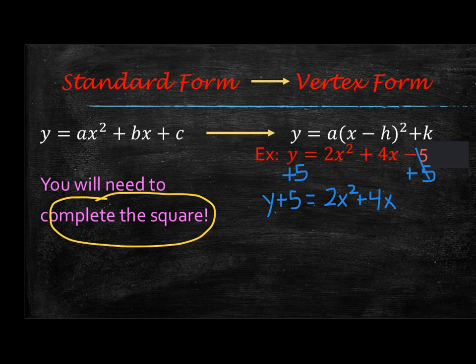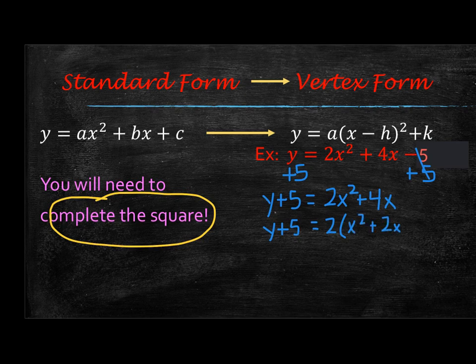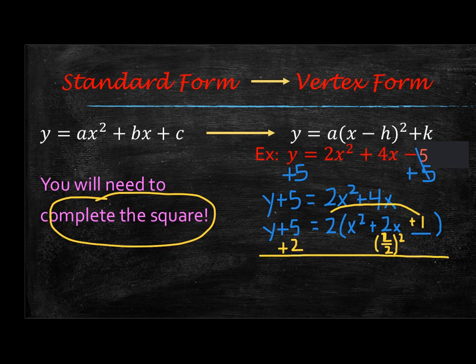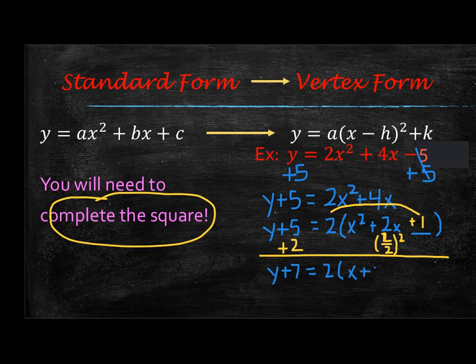Then notice that your a is not 1, so I do need to divide that out. So I'll have y plus 5 equals 2 parentheses x squared plus 2x. And I'm going to leave a space and close my parentheses. In this space, you will take half of that b term, so take 2 and divide it by 2, and then square it. So 2 divided by 2 is 1, 1 squared is 1, so I'm going to add in a 1 here. But remember, on that right side, I'm really adding a 2 times 1, which is 2, so I'm going to need to add that to the other side as well. So then I will have y plus 7 equals 2, and then this factors with the perfect square pattern, which would be x plus 1 quantity squared.